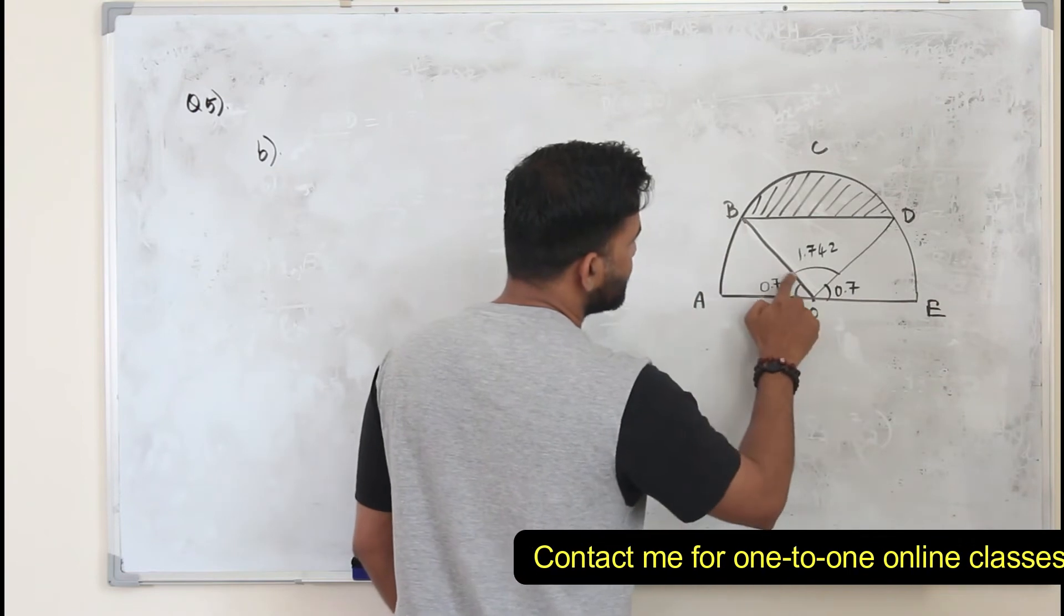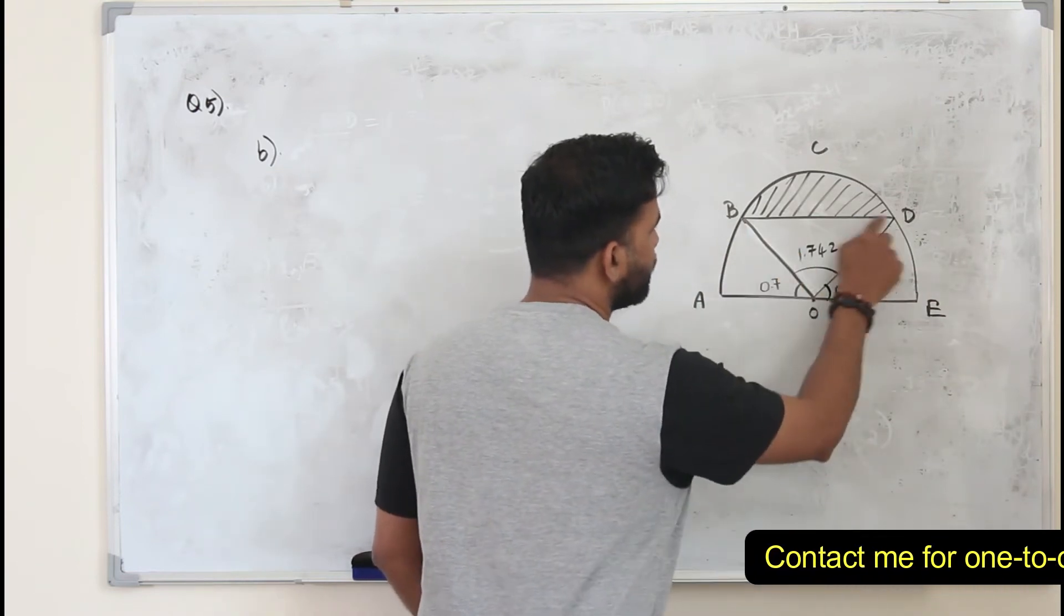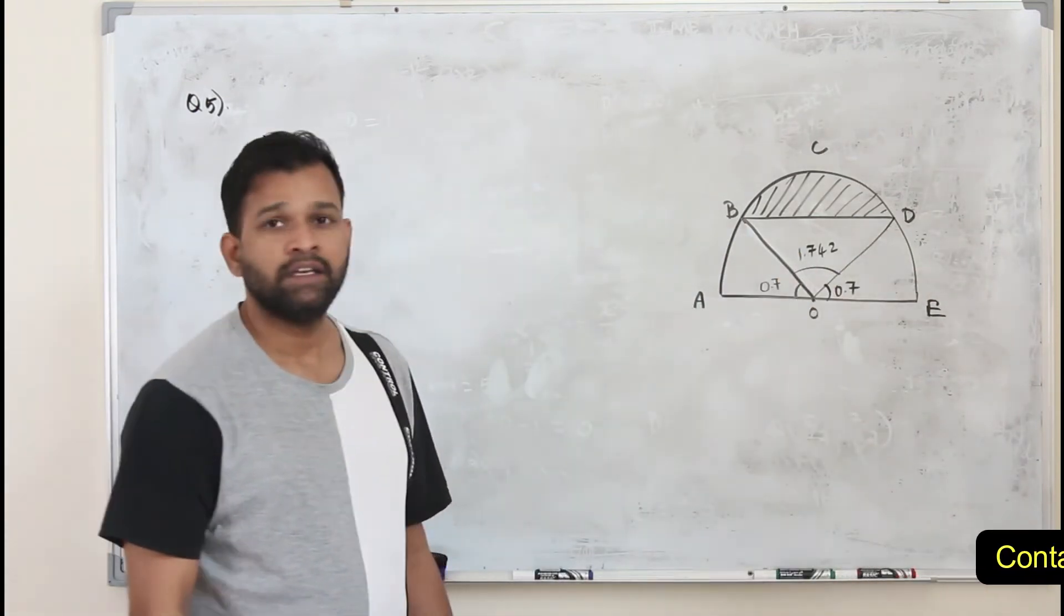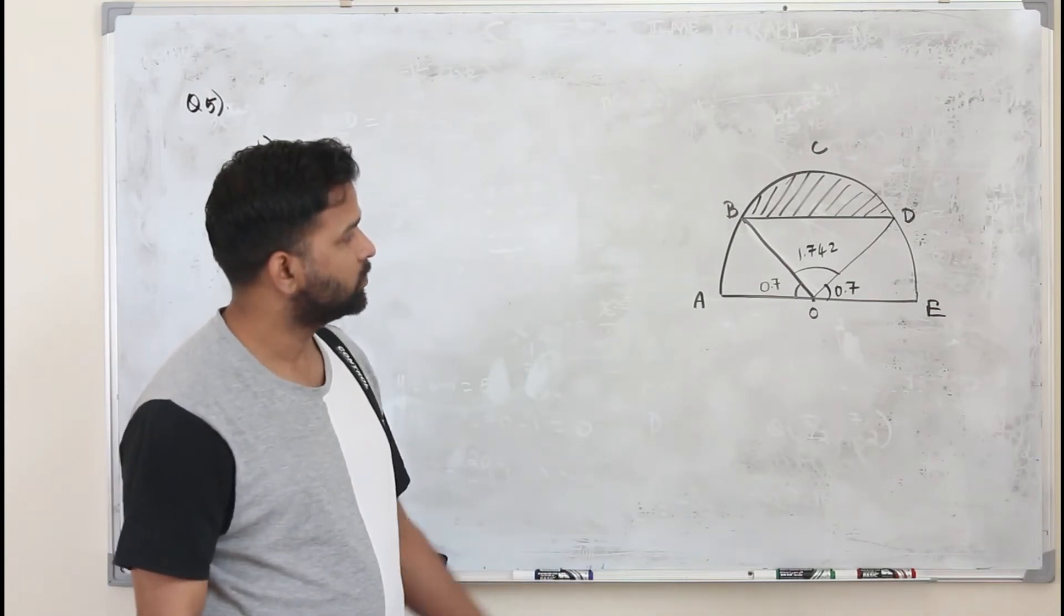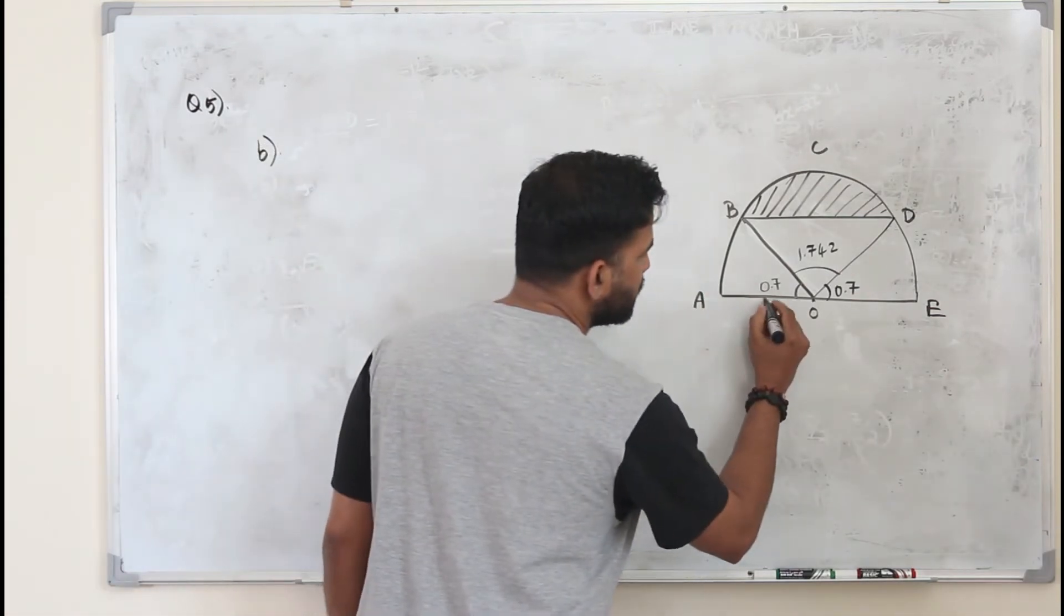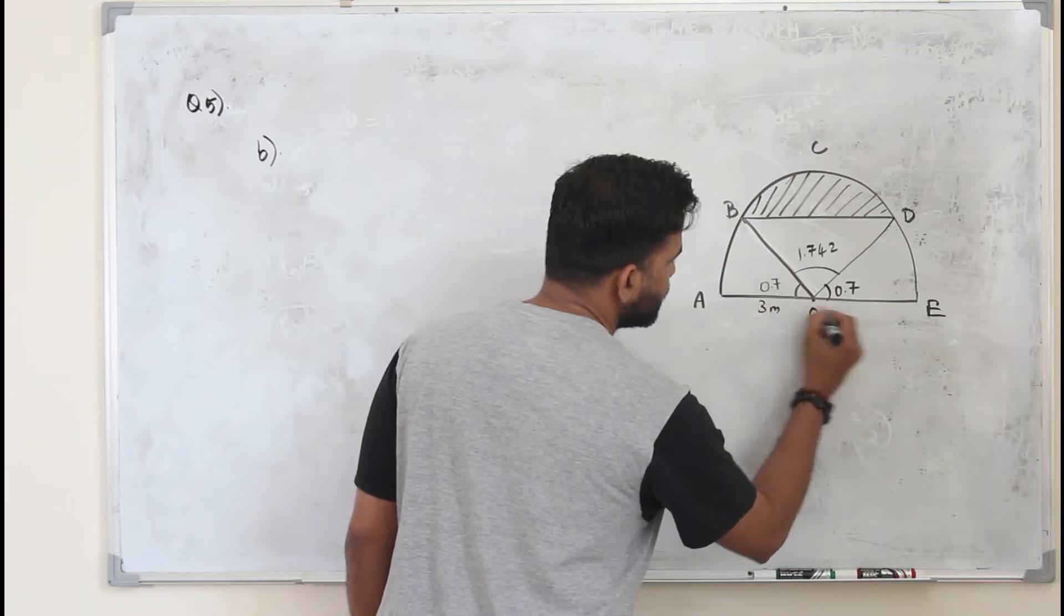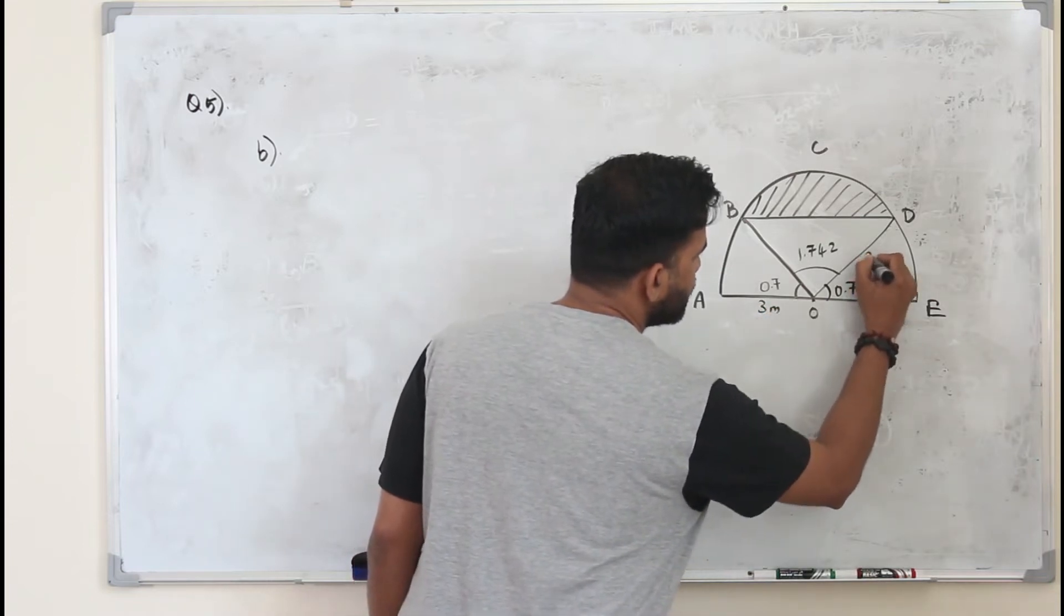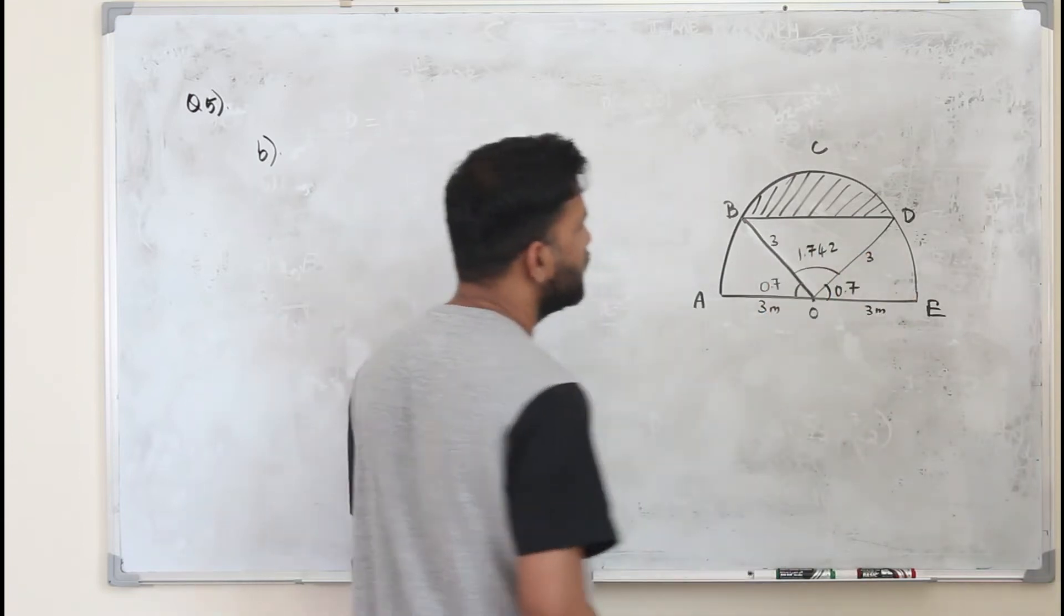How do you find this area? Area of this sector, area of this sector, area of this triangle. You can get this area already. Because it's given the radius is 3 meters here. So this also 3, this also 3, this also 3. You can do that.